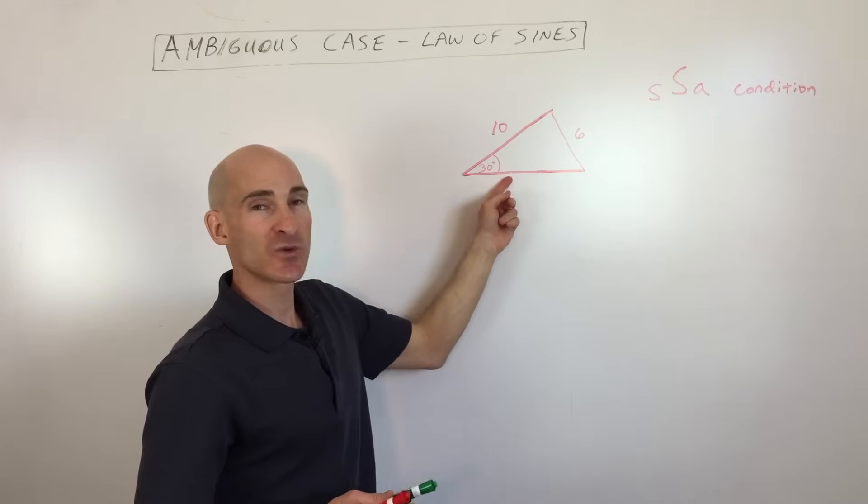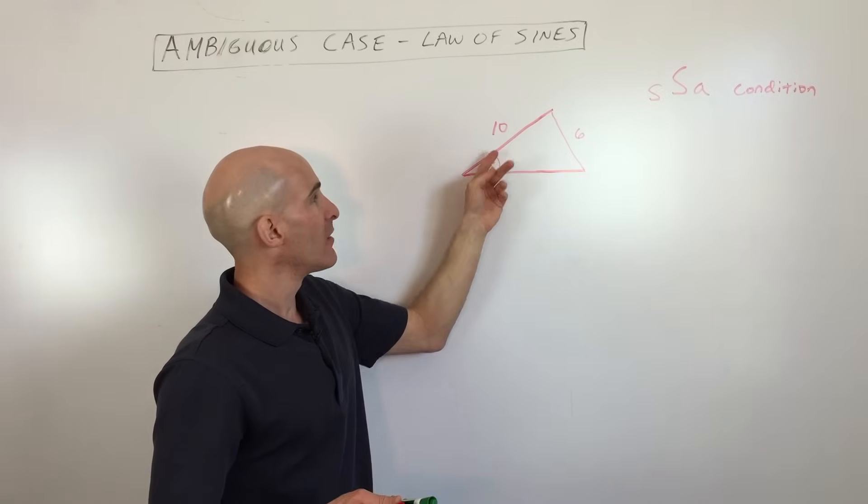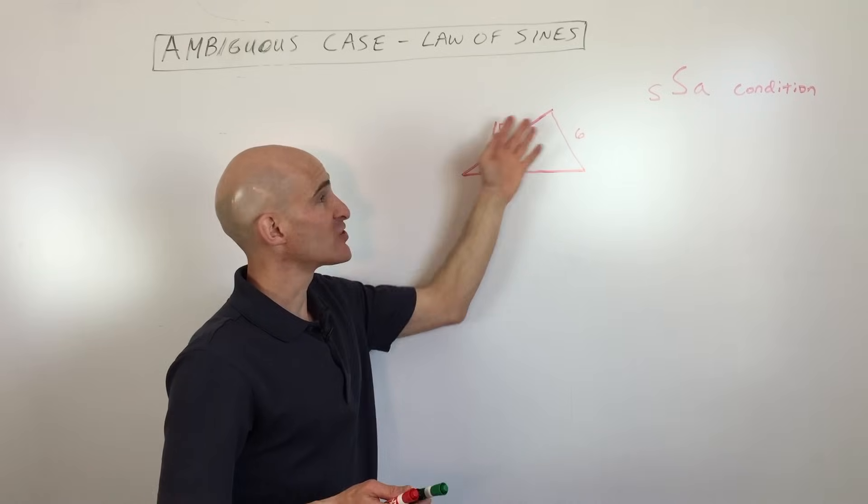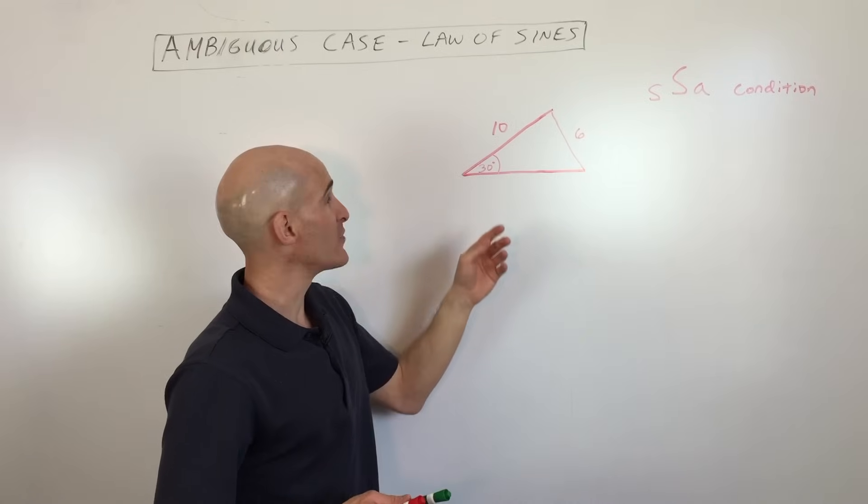When you're trying to solve a triangle, sometimes what they'll give you is three pieces of the triangle, and they want you to solve for all six, so the three other missing pieces.